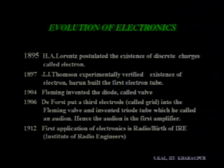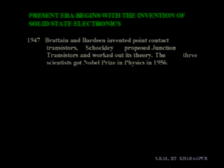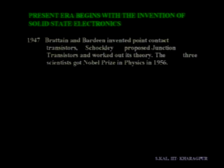This organization, known as IRE in 1912, is at present named the Institution of Electrical and Electronic Engineers, known as IEEE. The present era begins with the invention of solid state electronics. Solid state electronics started its journey from the discovery of the transistor. The first transistor was conceived by scientists Brattain and Bardeen. Later on, Shockley proposed junction transistors and worked out its theory. The three scientists — Brattain, Bardeen, and Shockley — received the Nobel Prize in Physics in 1956, the first Nobel Prize in engineering devices.